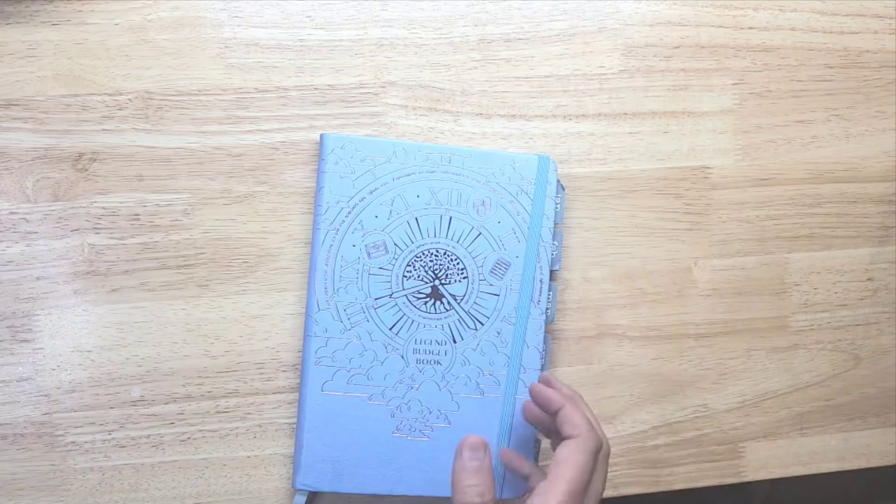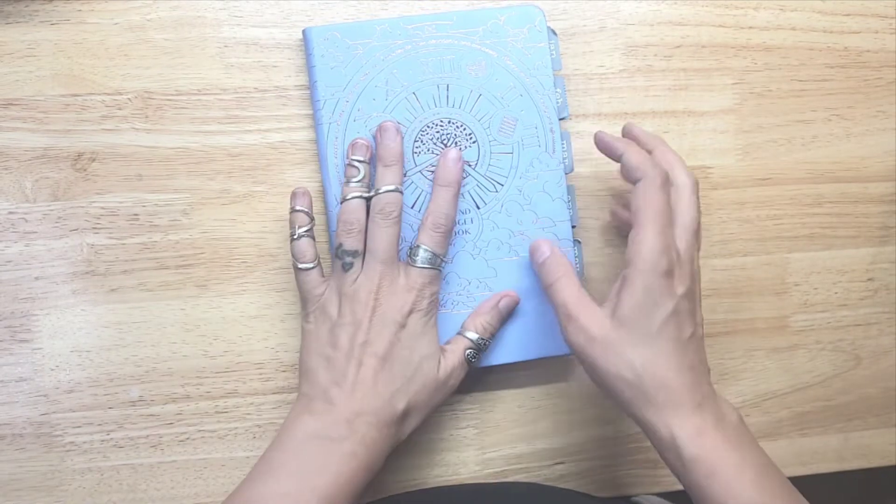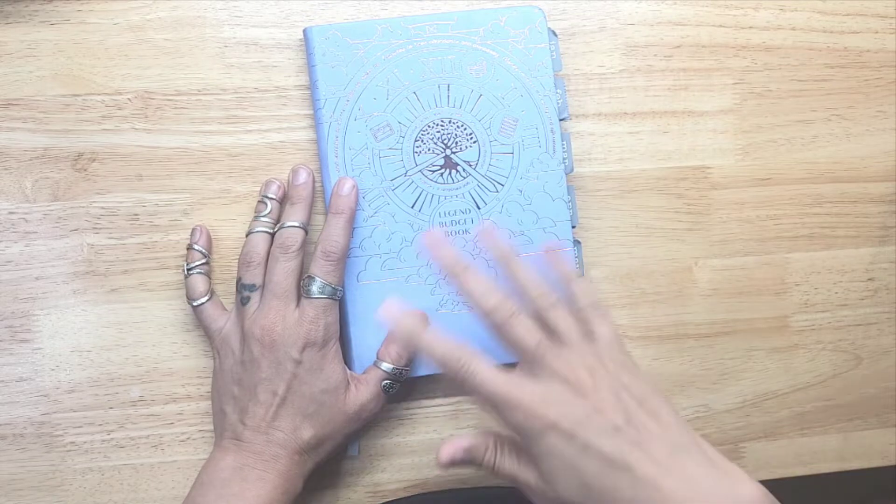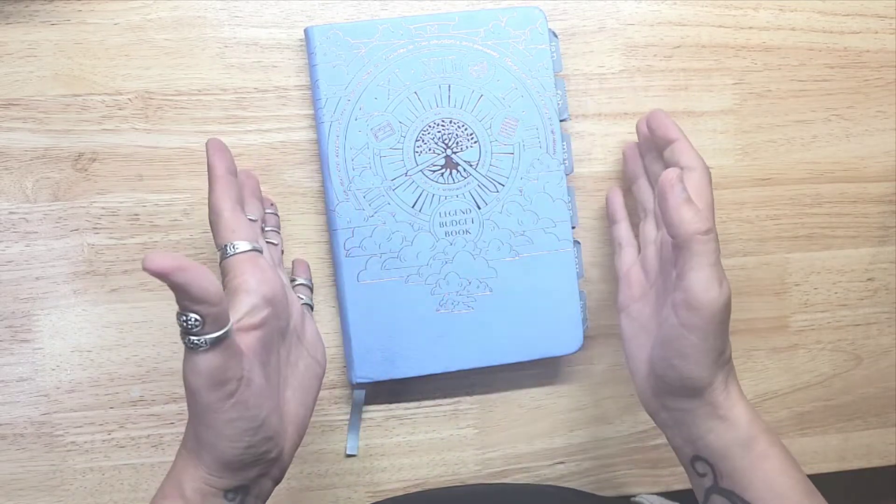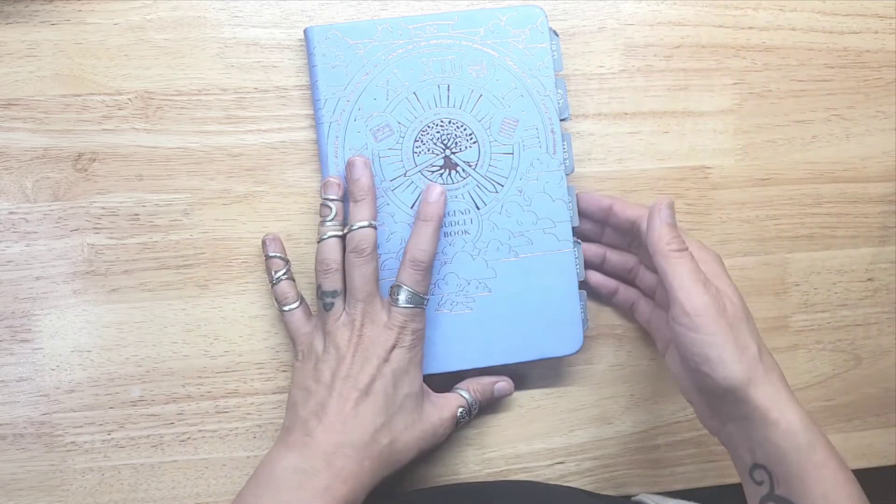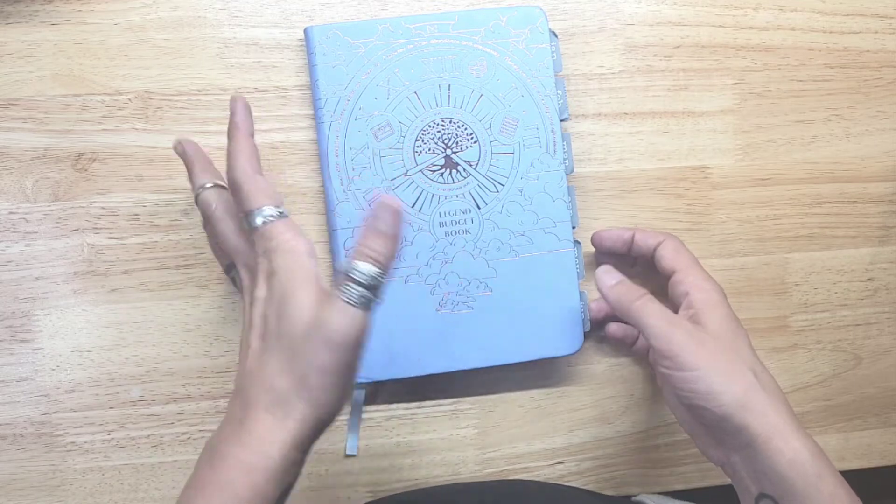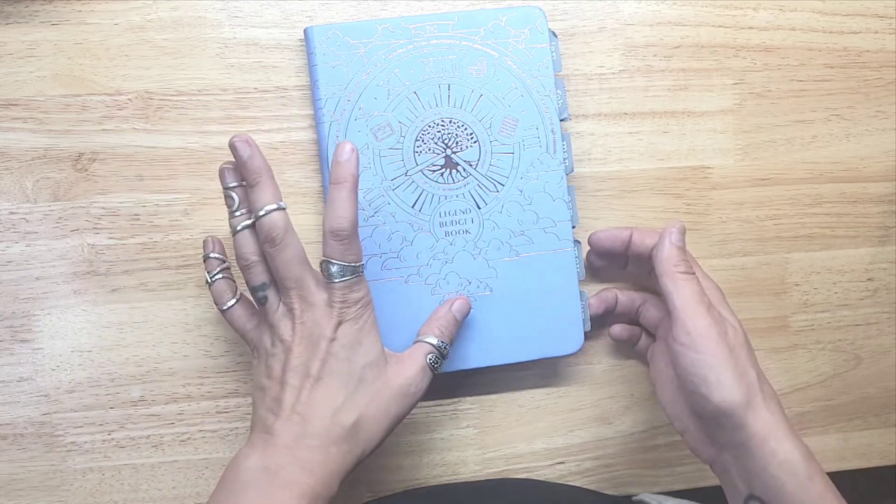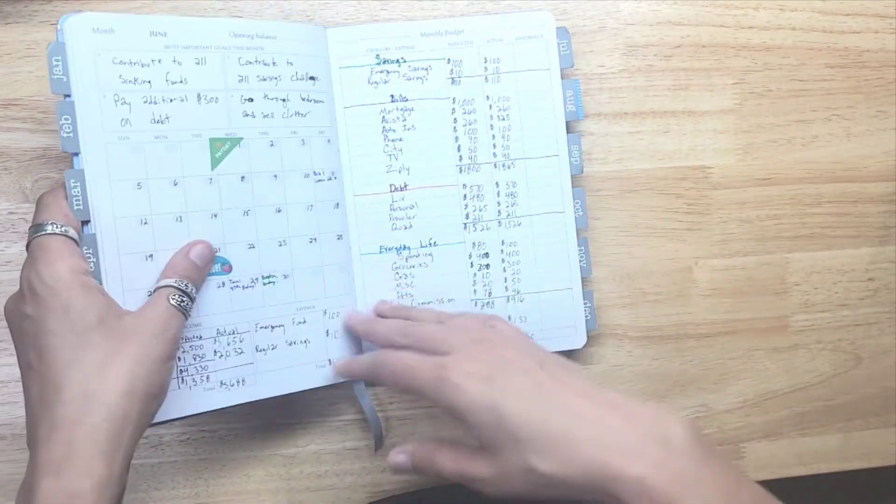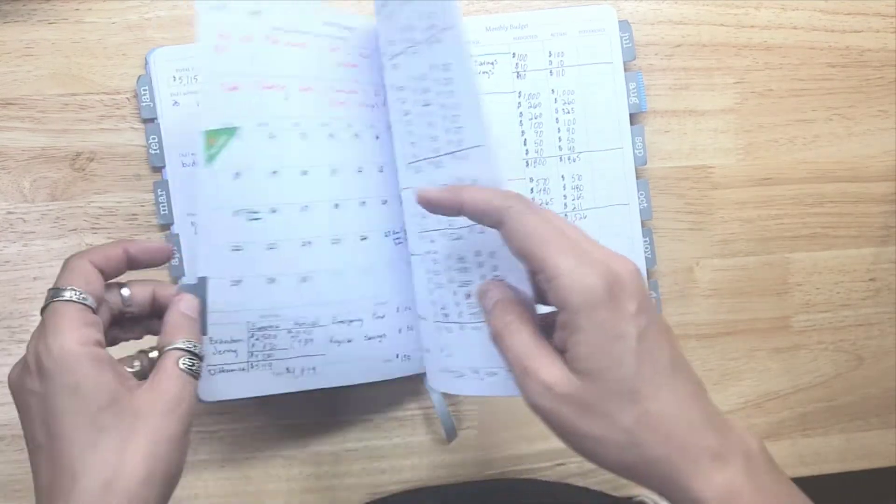We are lucky enough to live within walking distance of a lot of things in our small town. So we're done with the wallet and let's get into my budget book. We're doing the legend budget book this year and I'm really liking it. It's great for the monthly paychecks like what we get in our household right now. We're paid monthly and I'm having to adjust it a little bit but so far it's working.